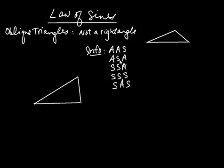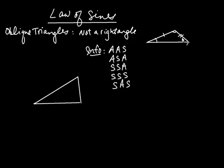If you see a letter between two others — like S is between two As — that's telling you the side is between two angles: angle, side, angle. But if somebody writes angle, angle, side, then the side is not between the two angles. You have to see what kind of information you're given to be able to solve your triangle.